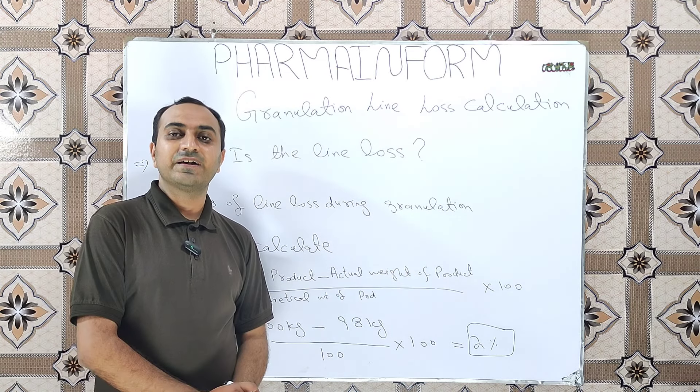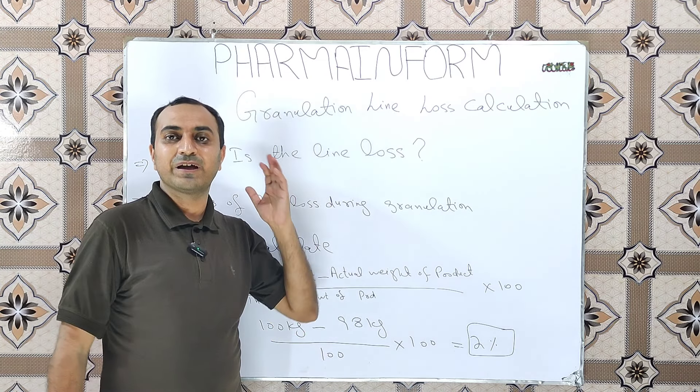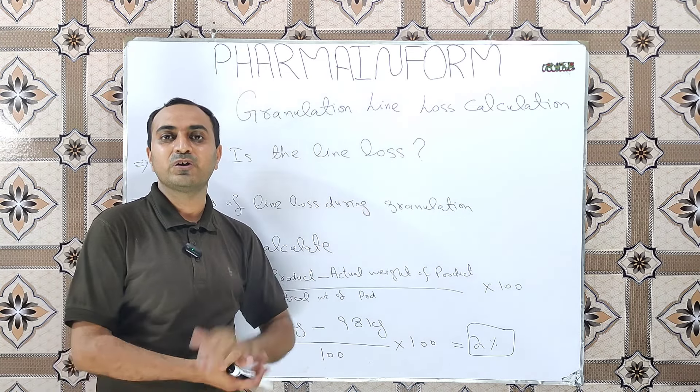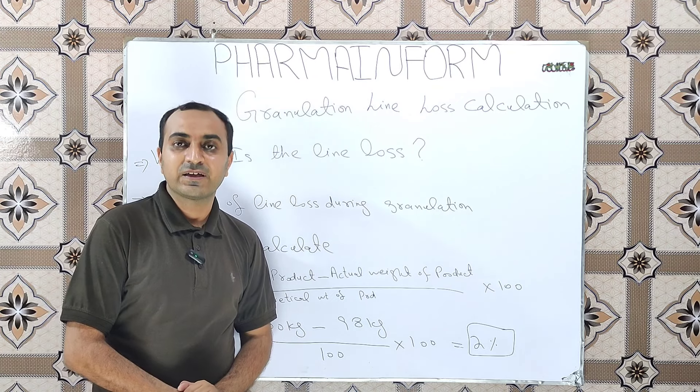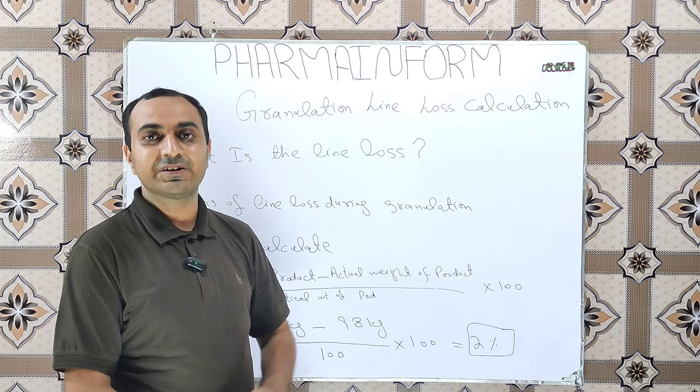If we are using dry granulation, line loss may also occur during the slugging or roller compaction method.